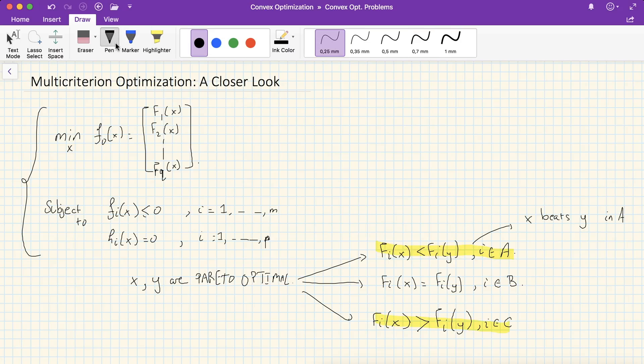And right here, x ties y in B. Naturally, the unions of A, B, and C form the set 1, 2 down to Q. So I'll just give you a small example to see what's going on.